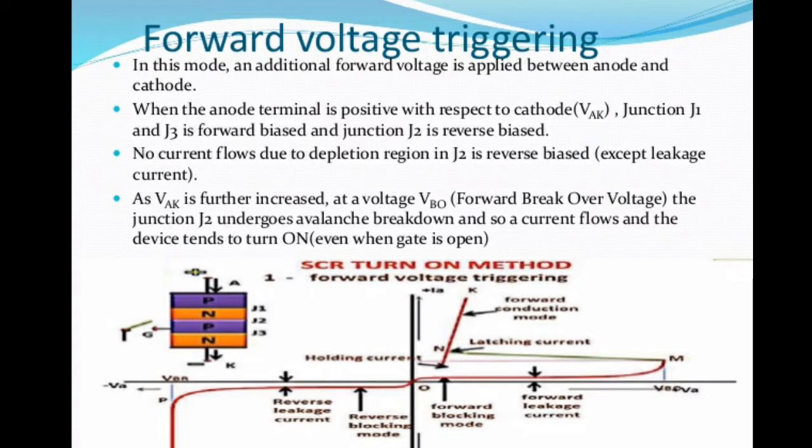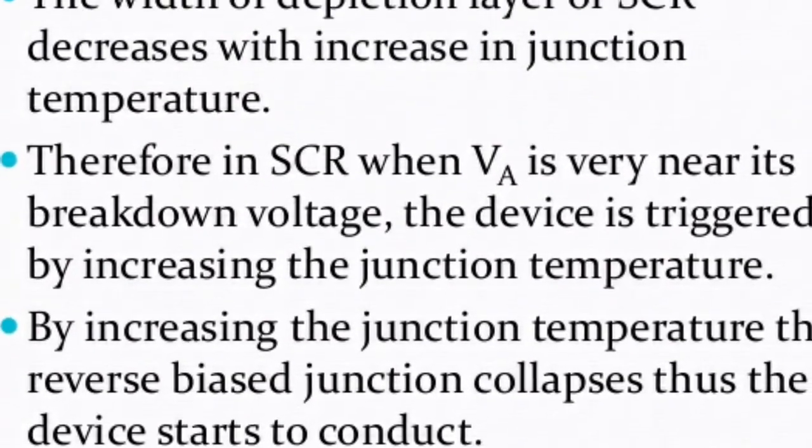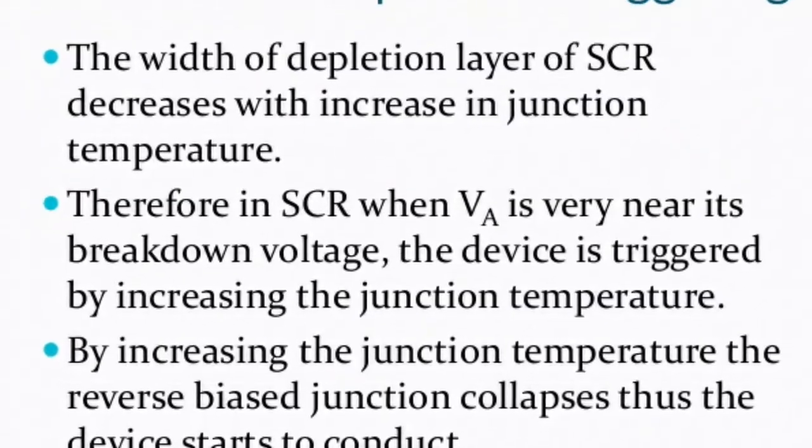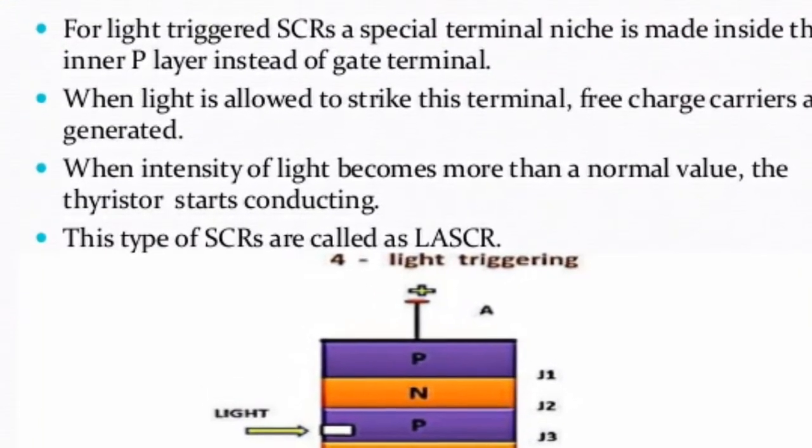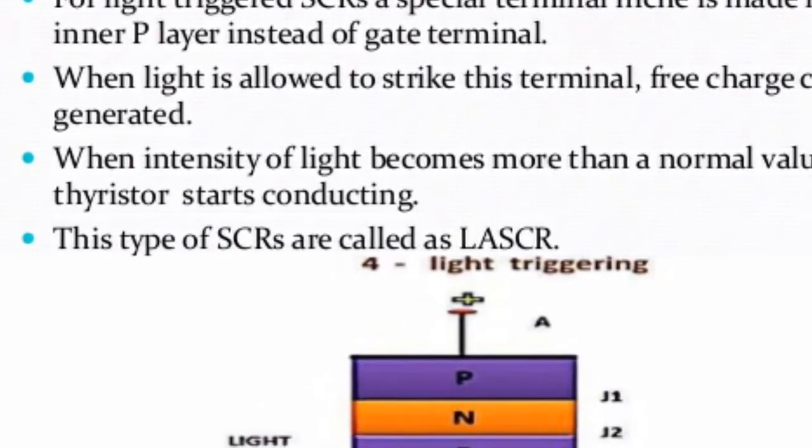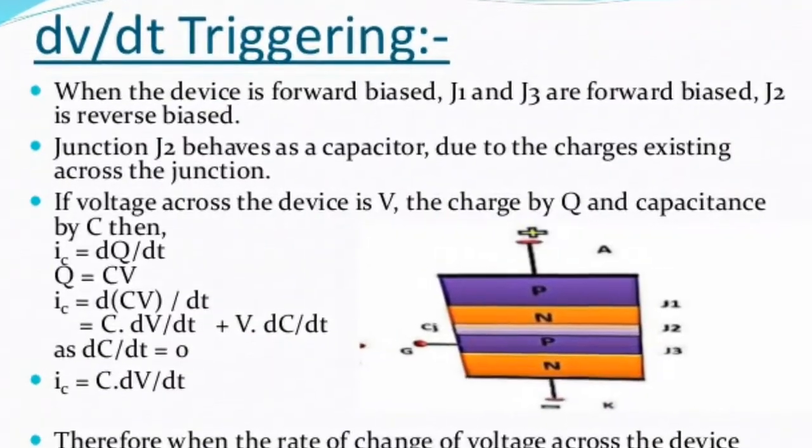This is known as avalanche breakdown, during which junction J2 will break down at sufficient voltages. The thyristor changes to its on state with low voltage drop and large forward current.